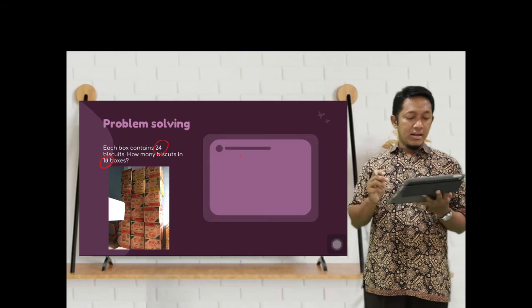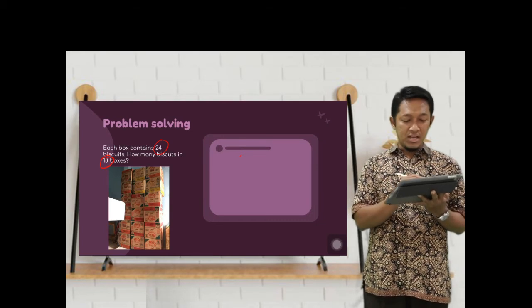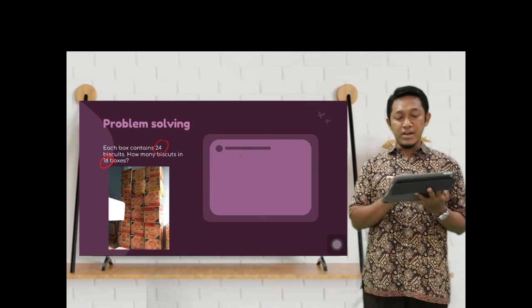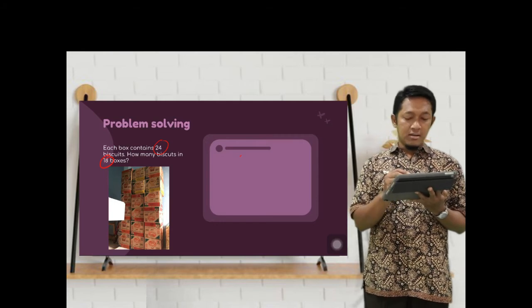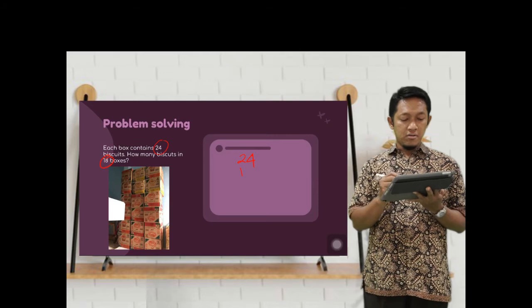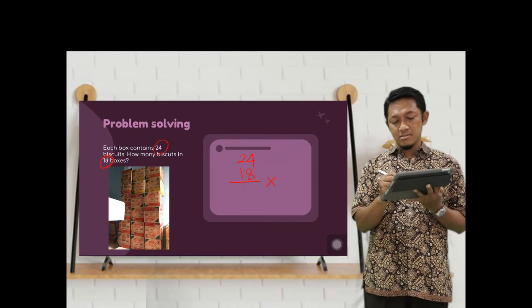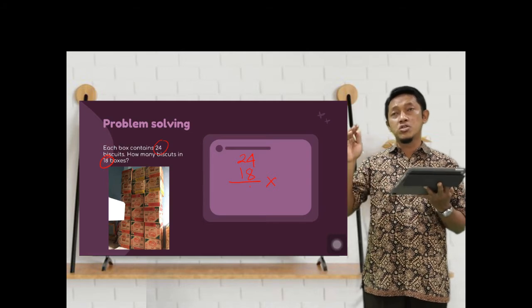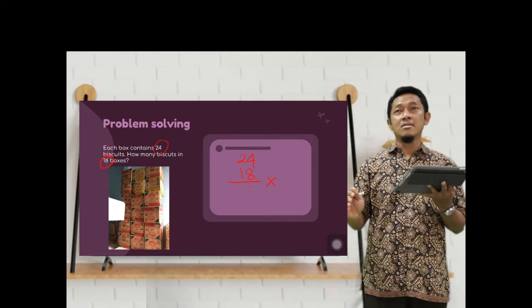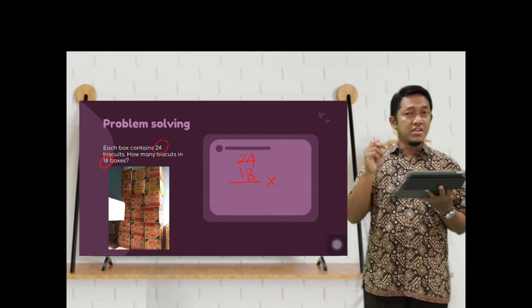This is the problem solving about multiplication. Look at the number. Each box, every box contains 24 cookies. There are pictures here. You can see from the picture. So we multiply 24 times 18.